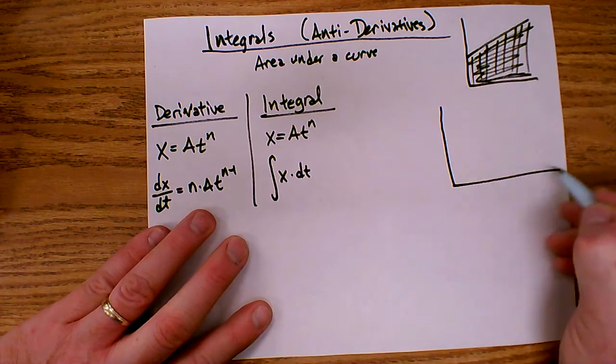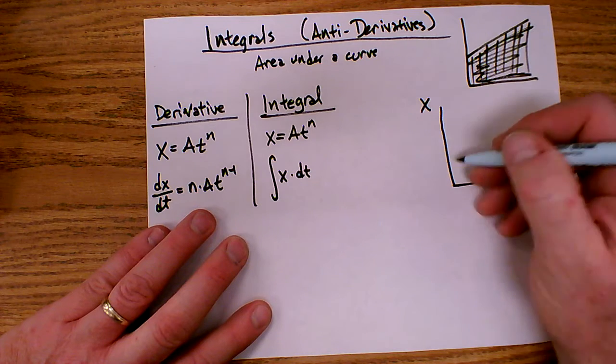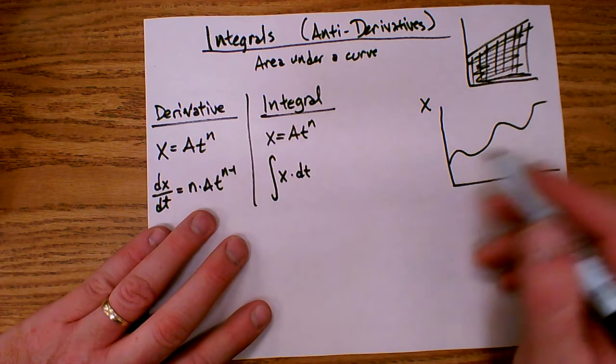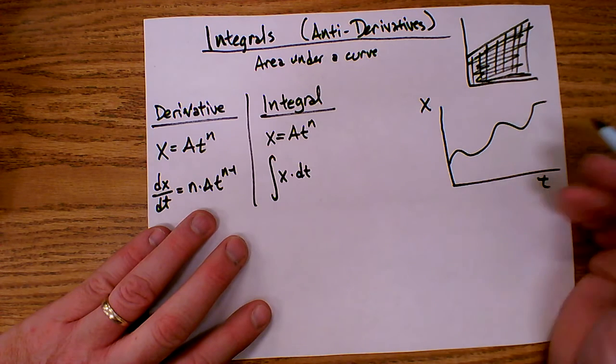So if I look at a graph of x and t, and just some random curvy graph. If it's linear, it's easy to find the area. But if it's a curvy graph, kind of random, then it's difficult to find the area.